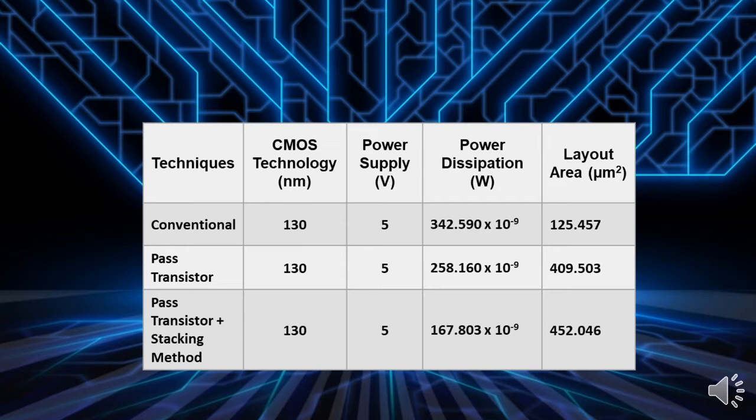For the layout area, the conventional design area is 125.5457, which is smaller compared to the pass transistor design and the combined technique of pass transistor and stacking method.